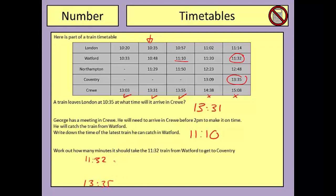I'm going to do this by adding on little bits of time. First of all I'll add on one hour — a nice big easy unit of time to work with. Adding one hour takes me up to 12.32. Adding another hour takes me up to 13.32. Now I'm pretty close to the arrival time — I just need to add on some minutes. From 13.32 to get to 13.35 I need to add on three minutes.